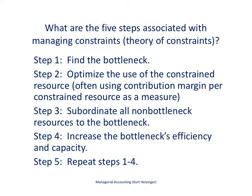There are five steps associated with managing constraints, called the Theory of Constraints. The first step is to find the bottleneck. The second step is to optimize the use of that constraint. Step three is to subordinate all non-bottleneck resources — move them from areas without bottlenecks over to where the bottleneck is. Step four is to increase the bottleneck's efficiency. Then go back and find the next bottleneck, repeating steps one through four.